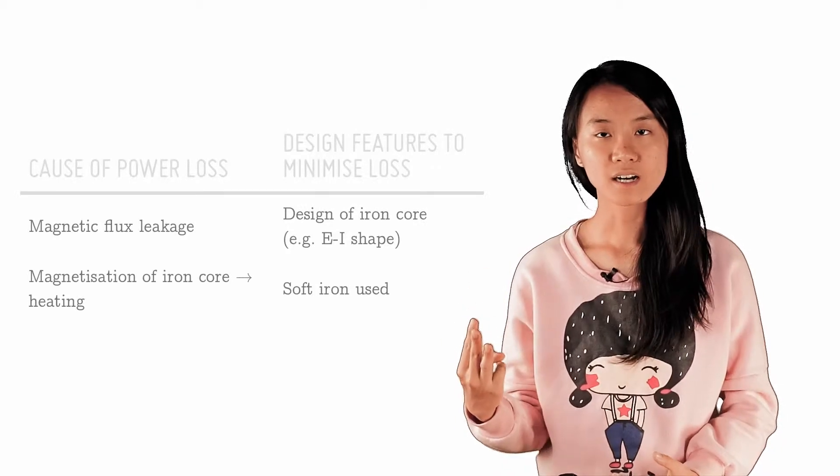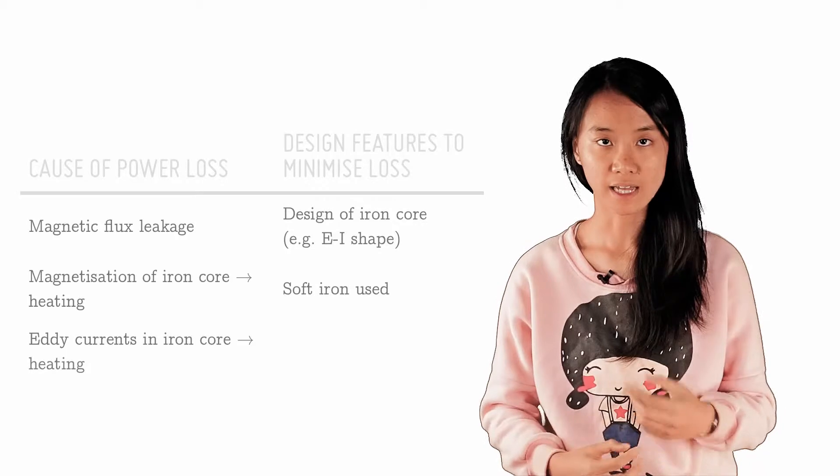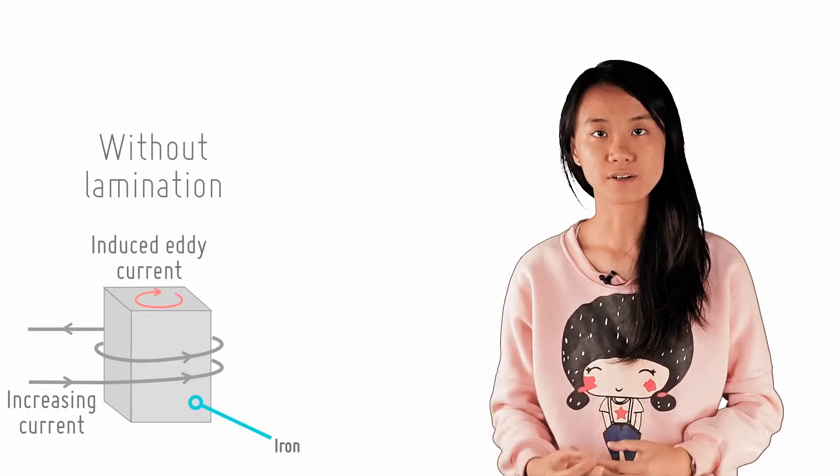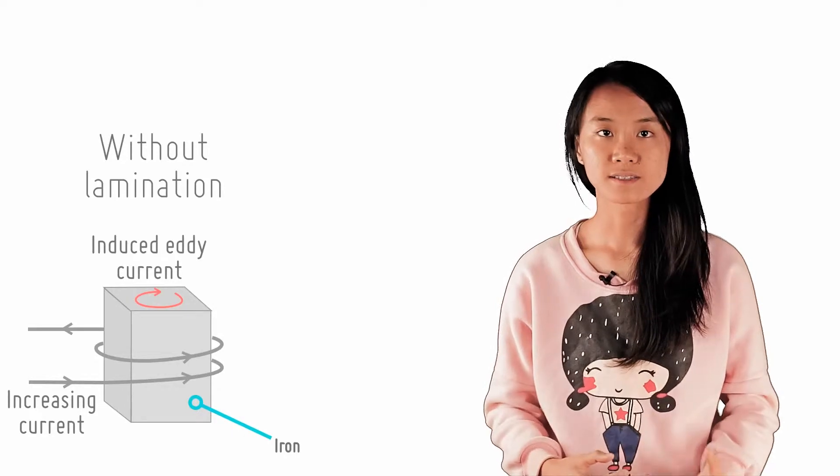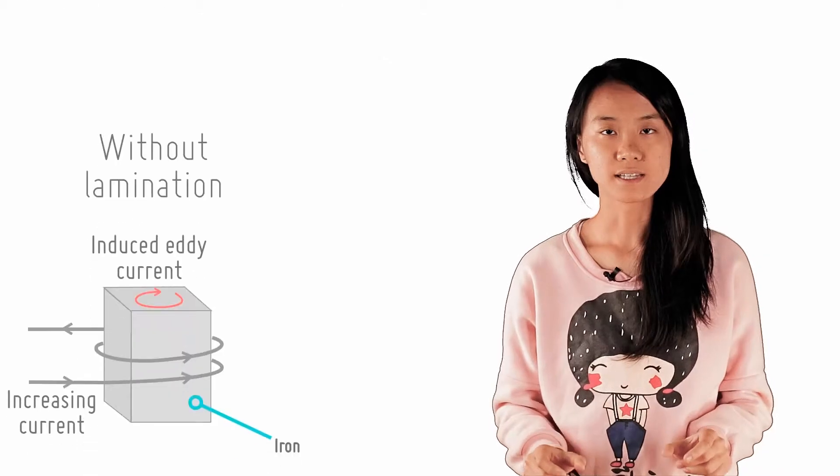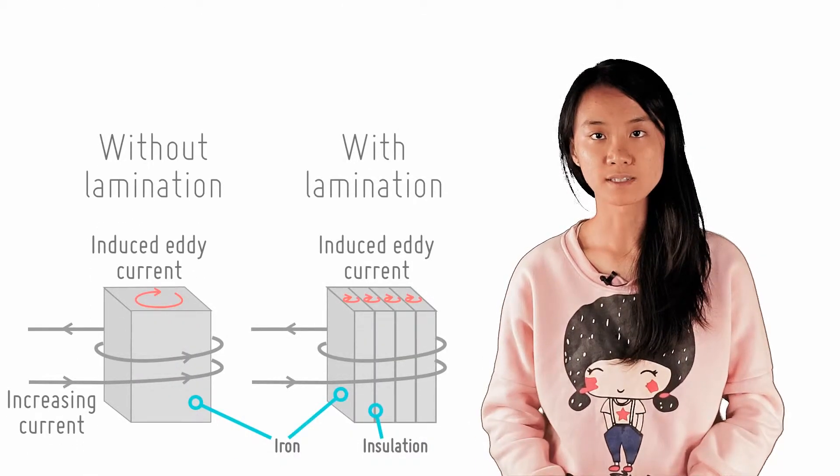Thirdly, another cause of power loss would be the heating effect due to eddy currents induced in the iron core to oppose the current flowing through the coils. And that is why iron cores used in transformers are usually laminated, so the gaps cut across the path of any induced eddy currents.